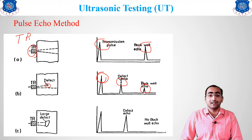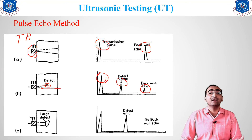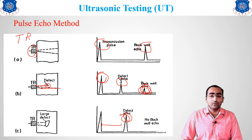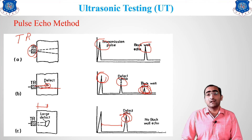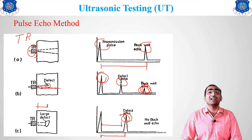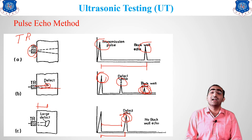The back-wall echo is reduced when a defect is present because some waves return after hitting the defect while others continue to the back wall, reducing intensity. If there is a large or major defect, only a defect echo appears with no back-wall echo at all. By calculating the distance from the entrance peak to the defect peak, we can determine the depth of the defect.